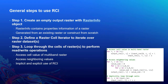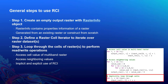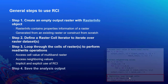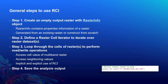Step 3: loop through the cells of the raster to perform read-write operations. Three additional notes: first, to access a cell value in a multi-band raster, include a band index before the row and column index. Second, you can access neighboring values using relative indices. Third, if you're only dealing with one raster, you can use RCI implicitly — in your for loop, you don't have to loop through an RCI object; you can directly loop through the raster object. Step 4: save the analysis output by calling the save method on your output raster object.